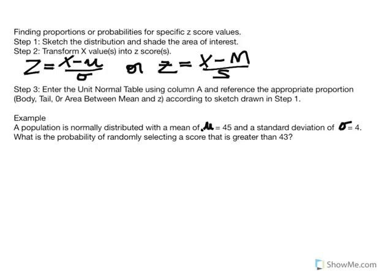Here's an example of how to find proportions or probabilities for specific z-score values. Step one: sketch your distribution and shade the area of interest. Step two: transform an x-value or values into z-scores using our equation. Step three: enter the unit normal table using column A and reference the appropriate proportion — body, tail, or area between the mean and z — according to the sketch drawn in step one. I can't stress enough how important it is to actually sketch your distribution, as students who neglect that step tend to make careless mistakes.